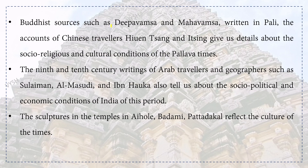Buddhist sources such as Deepavamsa and Mahavamsa written in Pali, and accounts of Chinese travelers Huynh Sang and Itsing, give us details about the socio-religious and cultural conditions of the Pallava times. The 9th and 10th century writings of Arab travelers and geographers such as Sulaiman, Al Masoodi, and Ibn Hawkal also tell us about the social, political and economic conditions of India at that period.